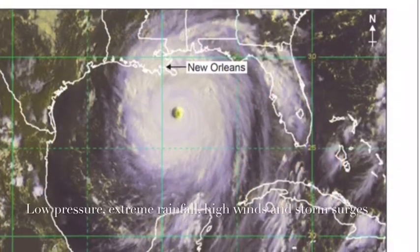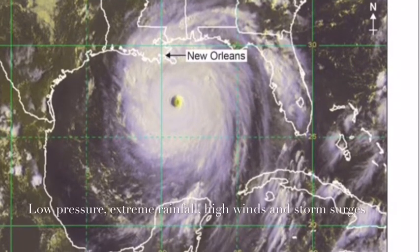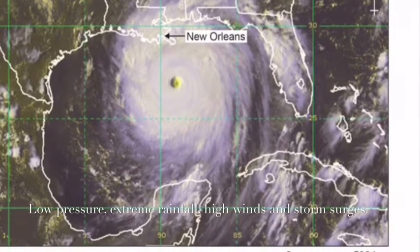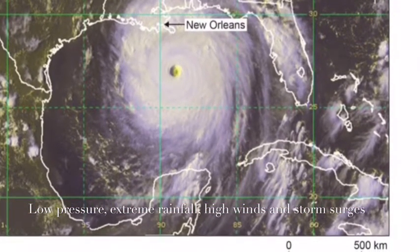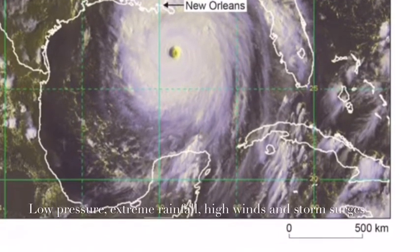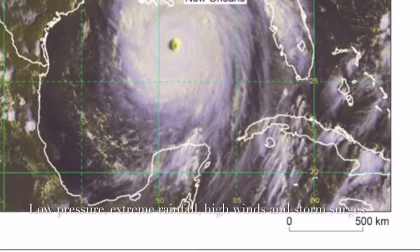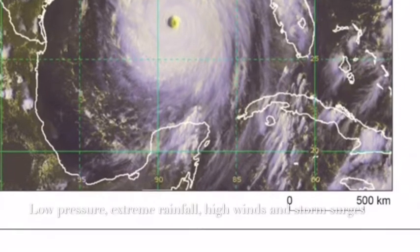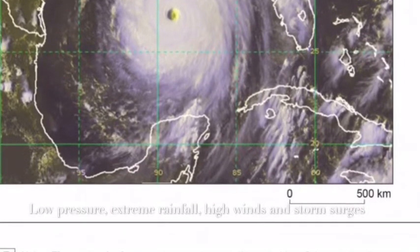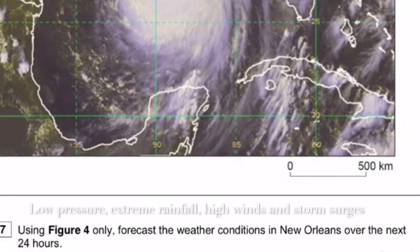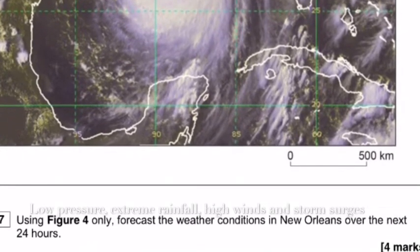You could get an exam question asking you to forecast the weather for a particular area using an image. If asked to forecast the weather for New Orleans over the next 24 hours, you would say: as the tropical storm approaches there will be low pressure, leading to extreme rainfall and very high winds up to 100 kilometres an hour, accompanied by storm surges and high levels of flooding. As the eye passes over there'll be a brief calm period of high pressure, but then low pressure will return and there'll be extreme rainfall and high winds.